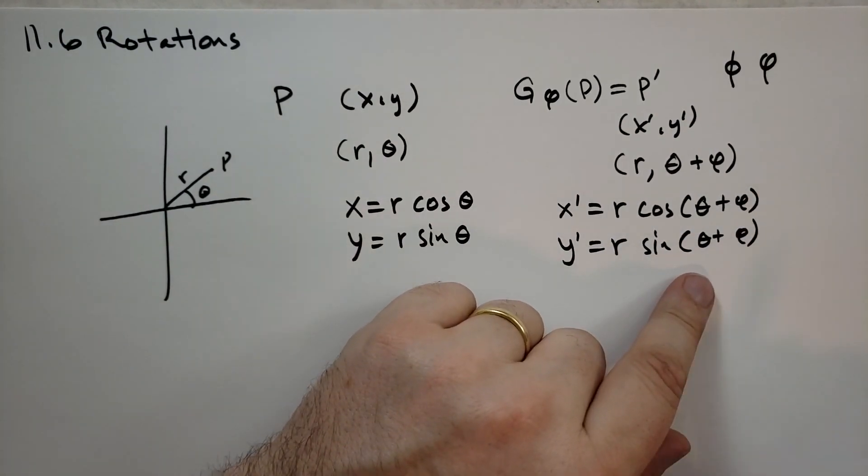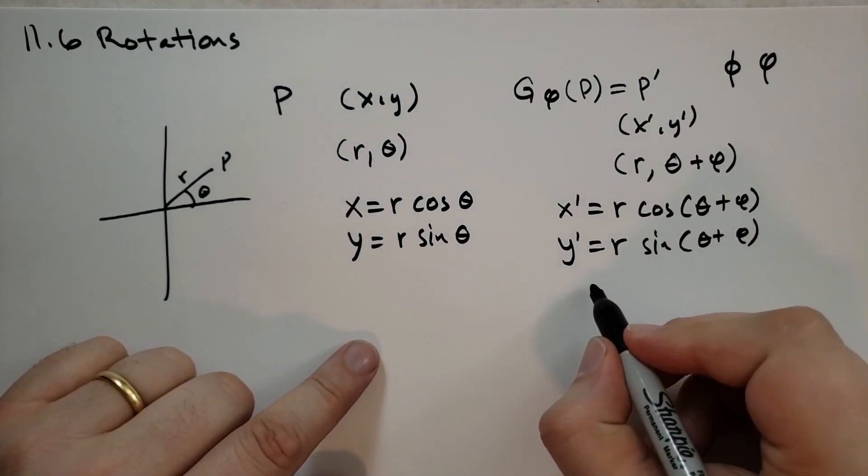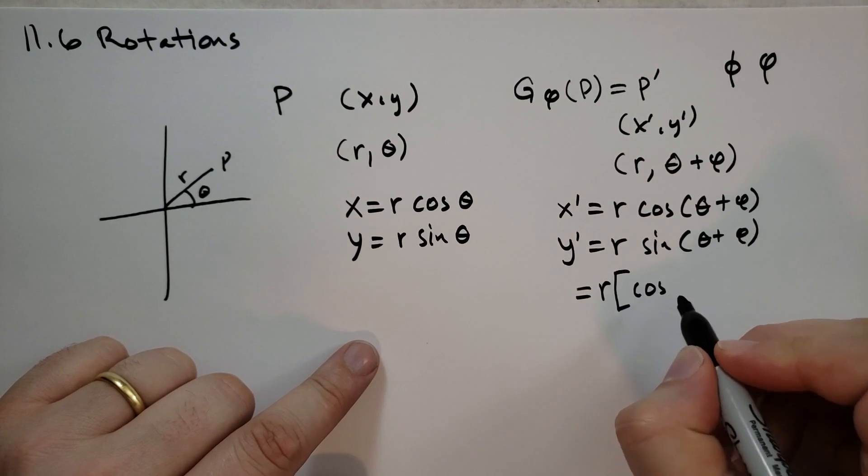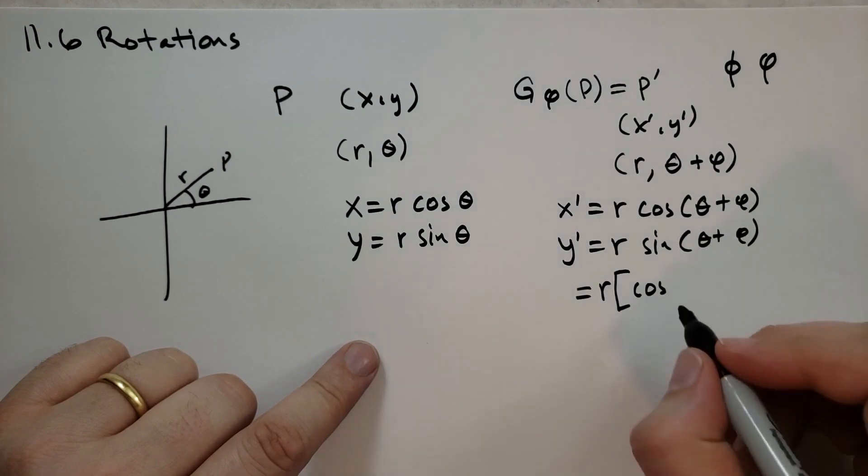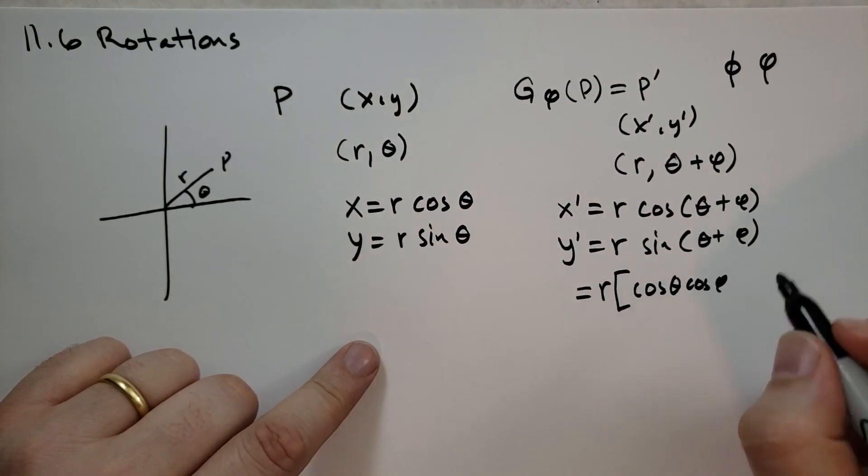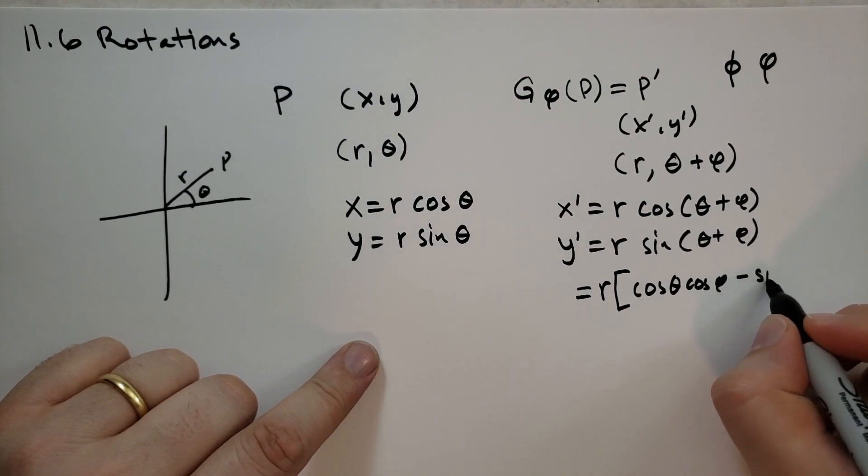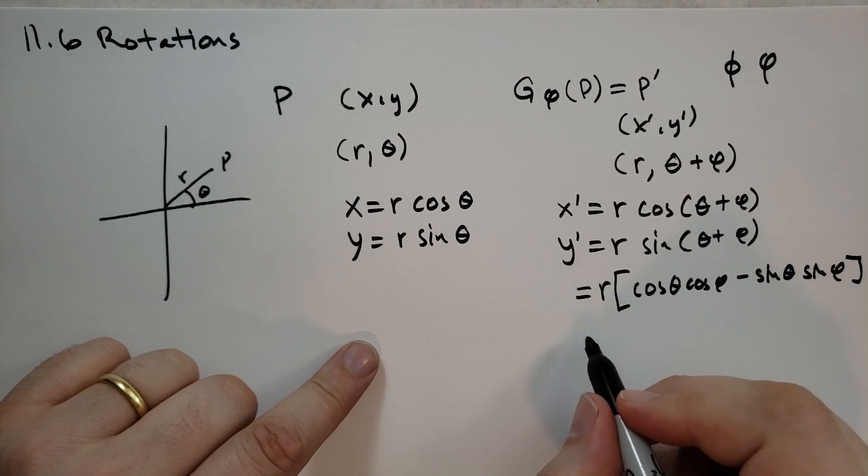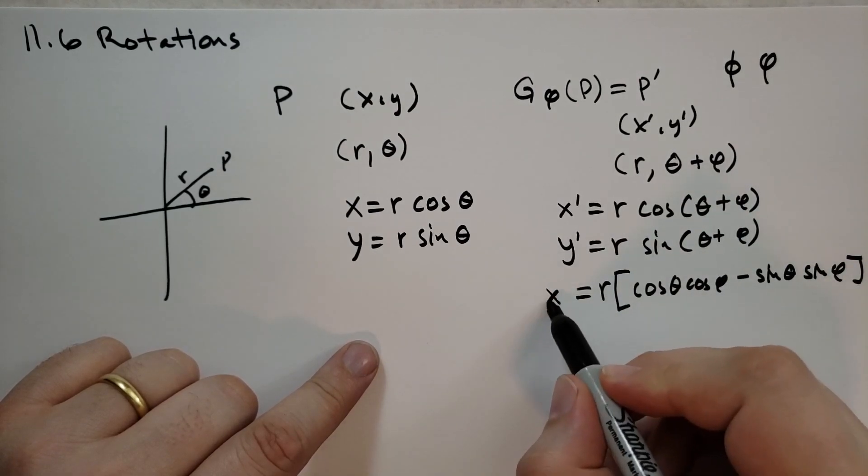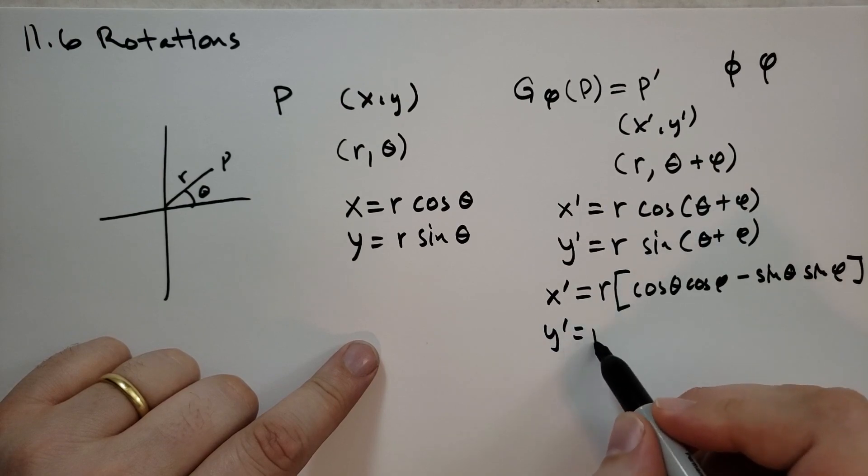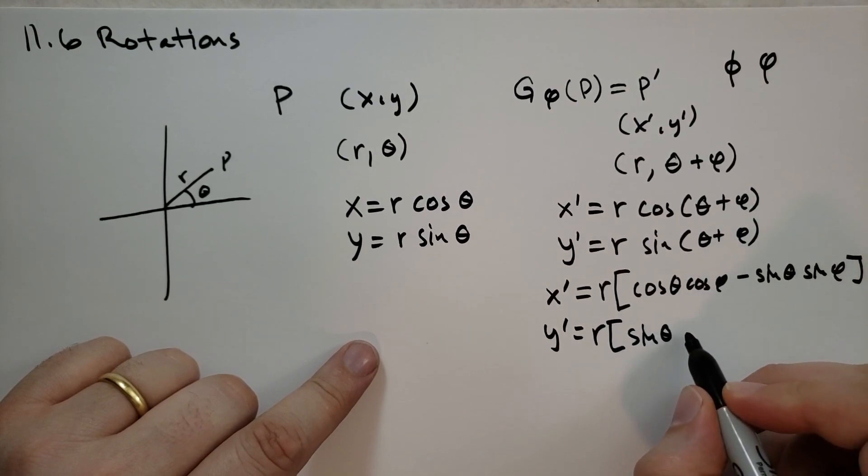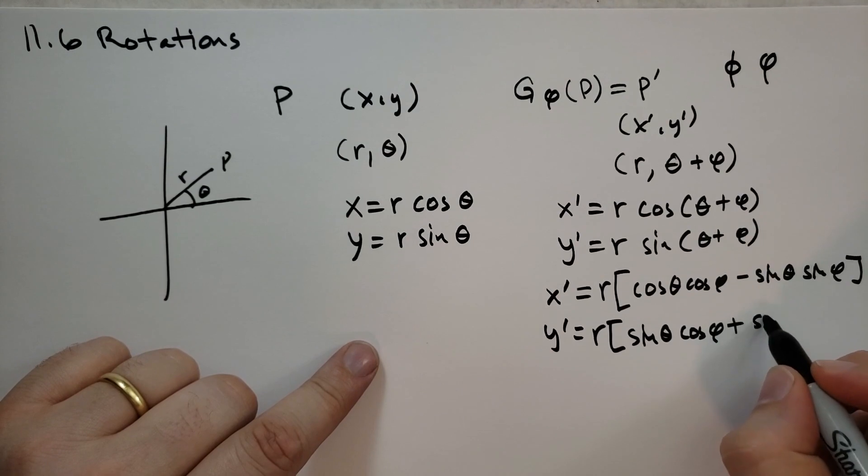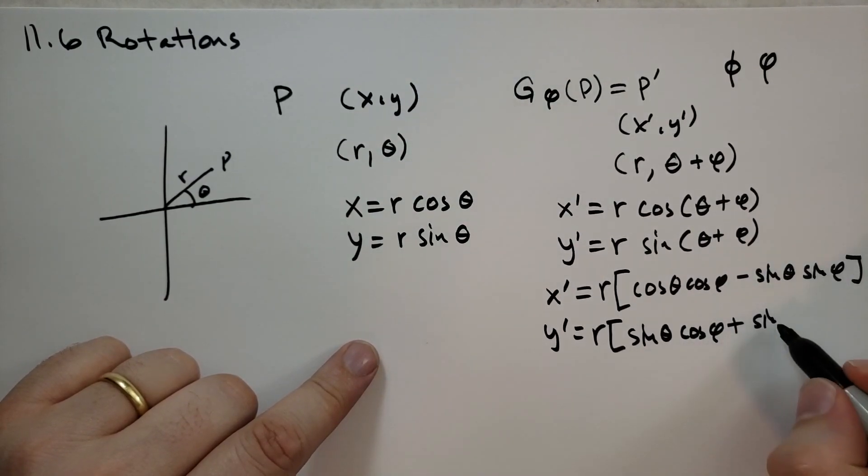And remember last section, we talked about what happens when we need to add two angles. Well, we can rewrite these as r times cosine of theta cosine of phi, and then minus sine theta, sine phi. That's the x prime, and the y prime, we can rewrite that as r of sine theta, cosine phi, plus sine phi, cosine theta. So he kind of plays with the order a little bit here.